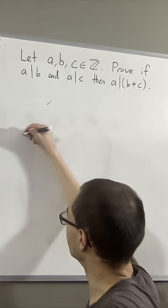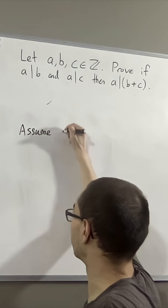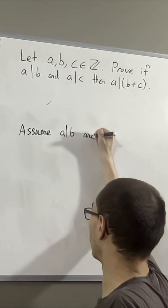So the way we can prove this is we start out by assuming that a divides b and a divides c.